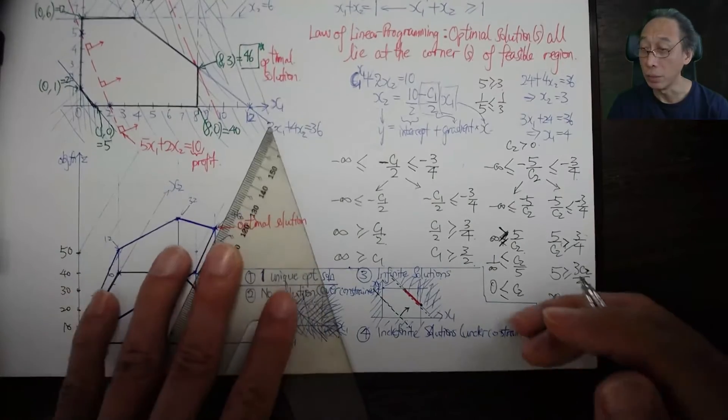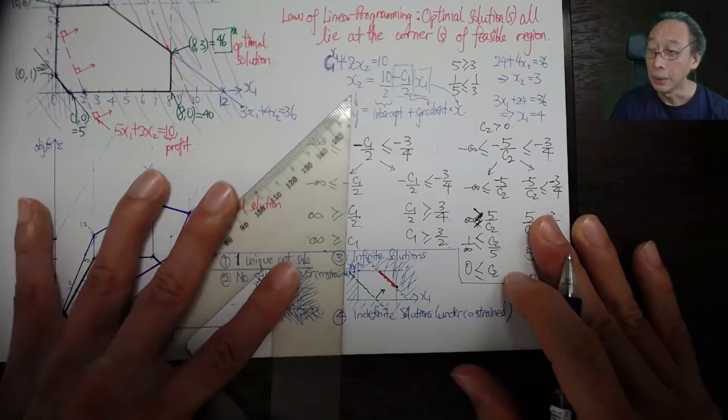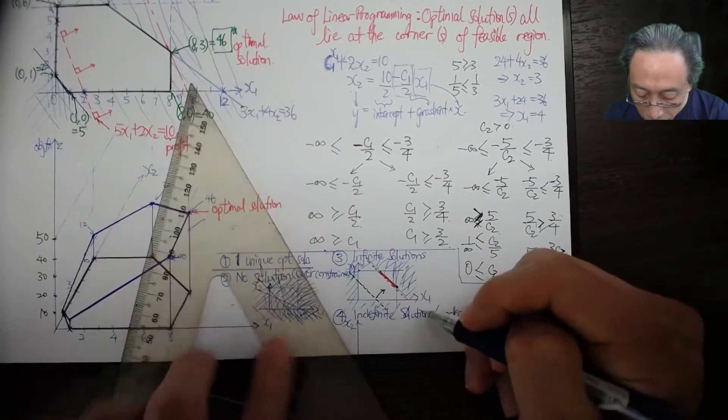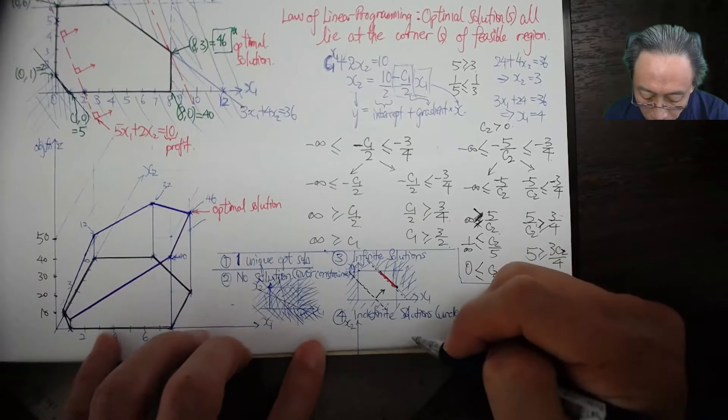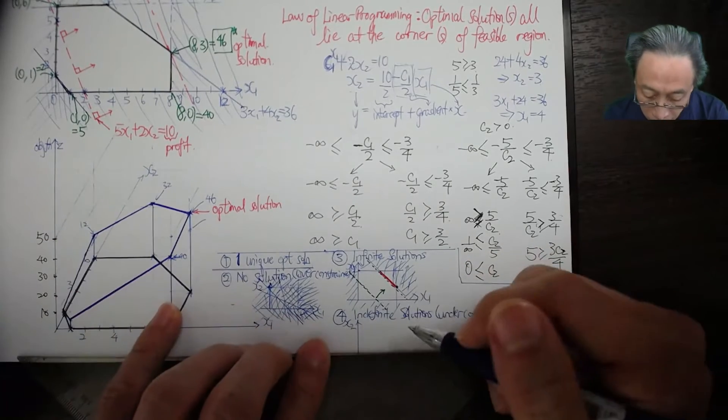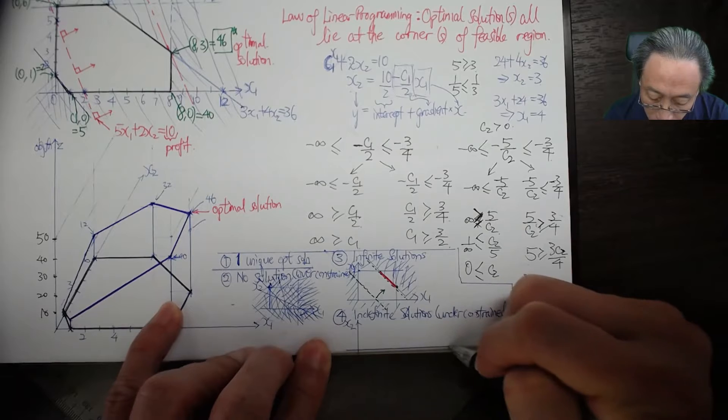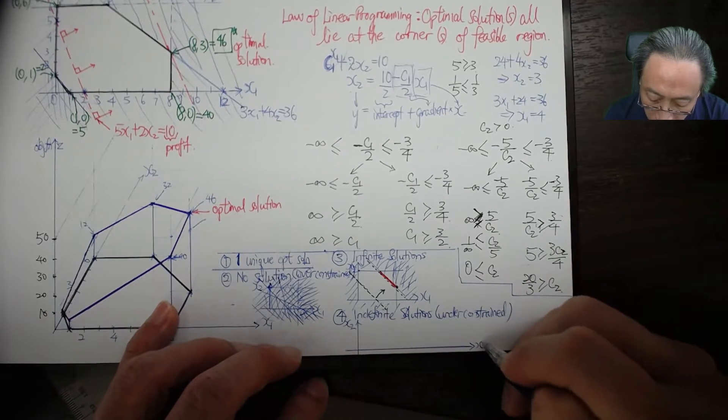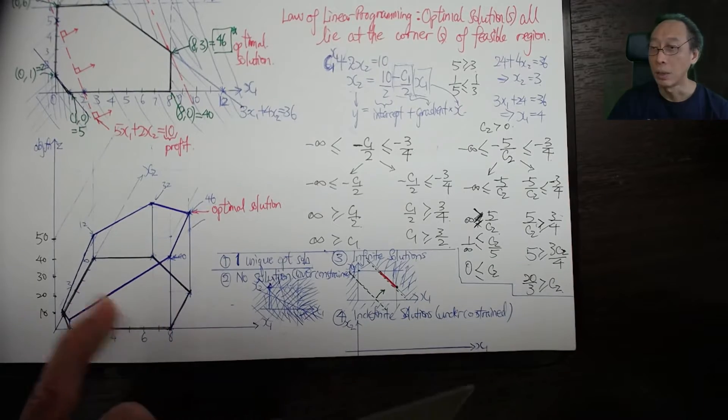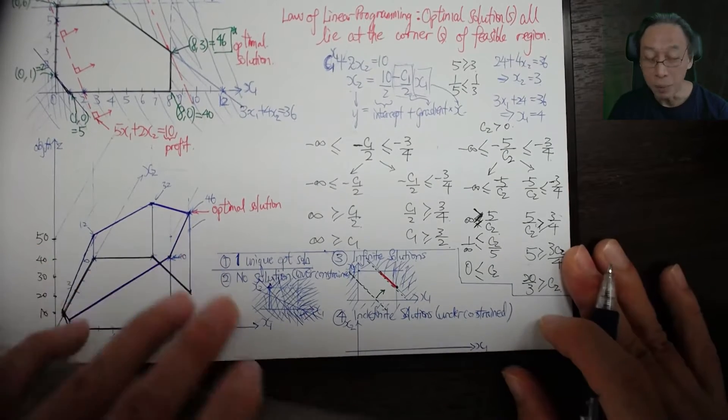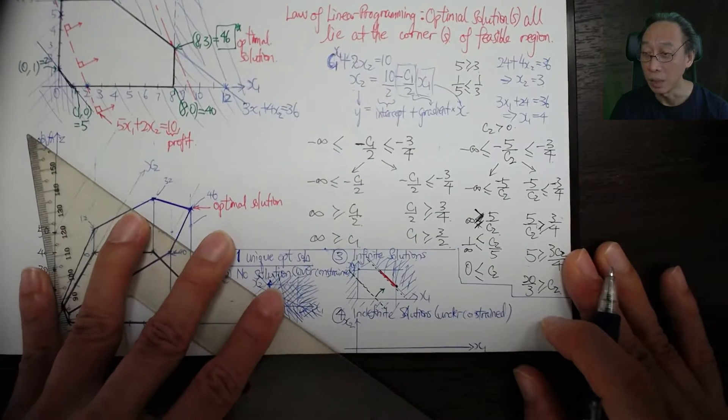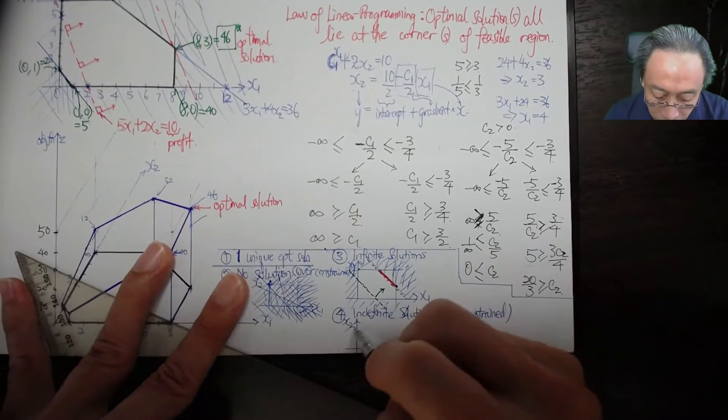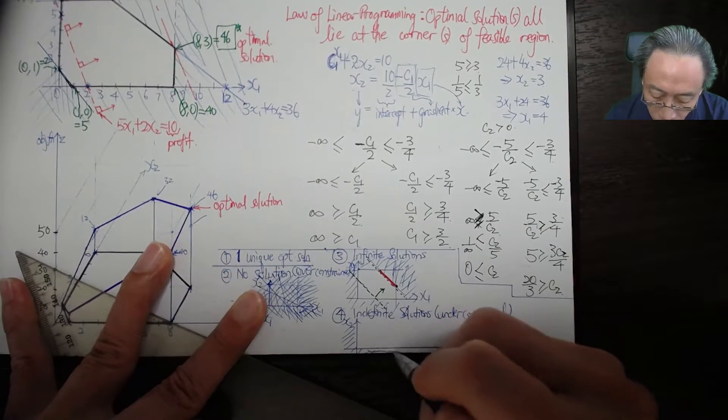So what does indefinite solution situation look like? Again we use x1 and x2 since we are so familiar with it. The situation is that the profit, the objective function, can continuously be optimized towards infinity, and that's the reason why there is no definite solution. For example, we say there is no negativity constraints.